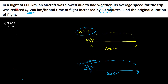In a flight of 600 km, an aircraft was slowed due to bad weather. Its average speed for the trip was reduced by 200 km per hour and the time of flight increased by 30 minutes. Find the original duration of the flight.